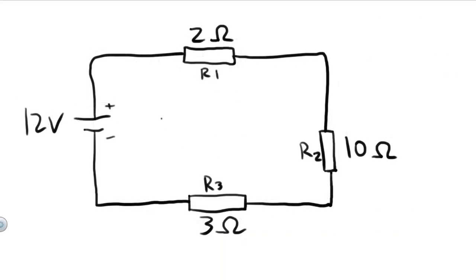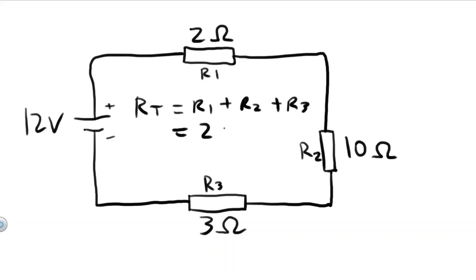Now imagine that we have a circuit with three resistors in series. All that means is that the resistors are connected end to end. In order to calculate the total resistance or the equivalent resistance, we can just add those resistances together. So RT will equal R1 plus R2 plus R3, which equals 2 plus 10 plus 3, equals 15 ohms.